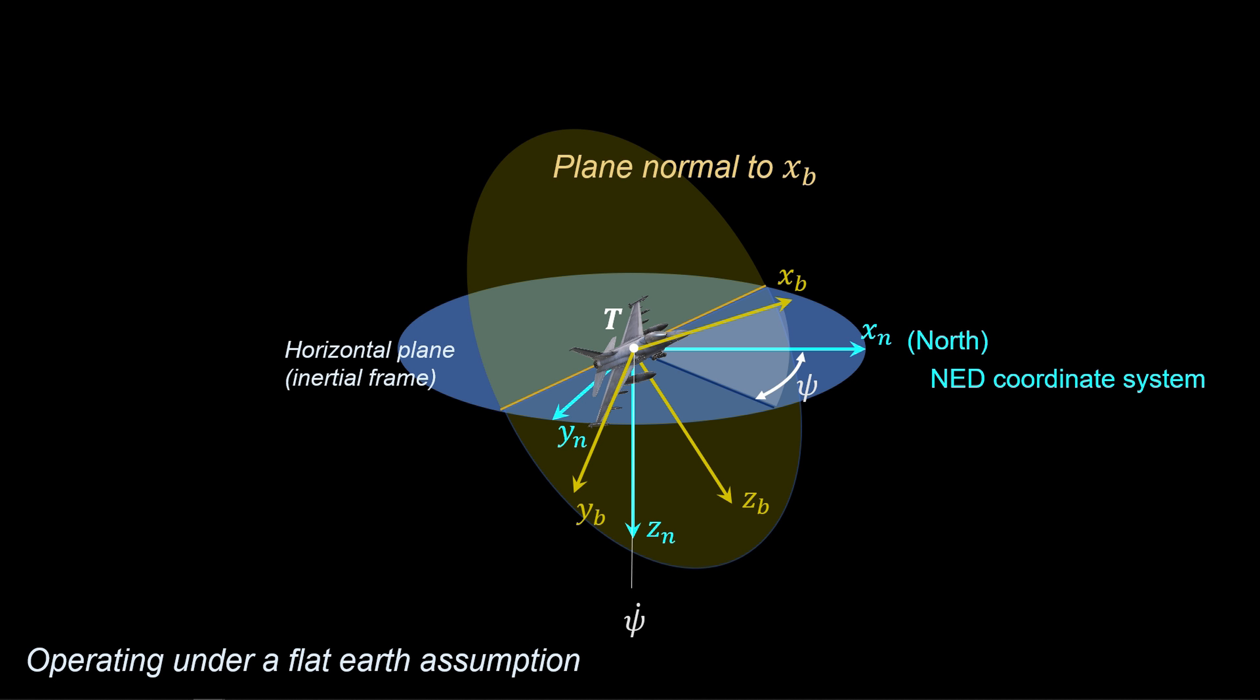The rate of yaw rotation is aligned with ZN. Next is the pitch rotation, theta, about the line of intersection between the planes. The rate of rotation about this line is theta dot. Finally, the body-yaw and Z-axes are rotated by the angle phi about the body-x-axis. The rate of rotation is phi dot.